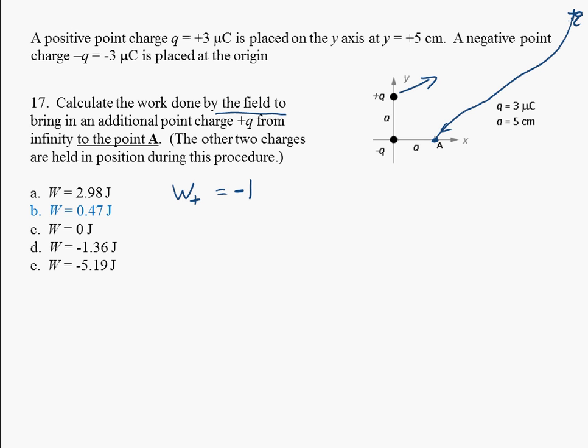And then we're going to have a K, and we have the same magnitude Q, Q, over R squared. The final distance that we're at here is this distance - I'll call it R positive - and that's just going to be equal to the square root of 2 times A.